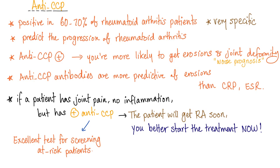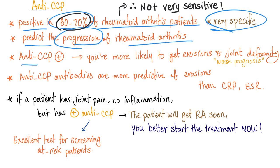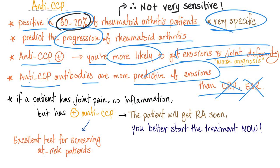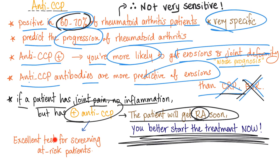Anti-CCP is positive in 60–70% of rheumatoid arthritis patients — not that sensitive by definition, but very specific. It can predict the progression of rheumatoid arthritis: a positive anti-CCP means you're more likely to develop erosions and joint deformity, carrying a worse prognosis. Anti-CCP antibodies are actually more predictive of erosion than CRP or ESR. If a patient has joint pain, no inflammation, but has positive anti-CCP, they will likely develop rheumatoid arthritis soon — treatment should start now.